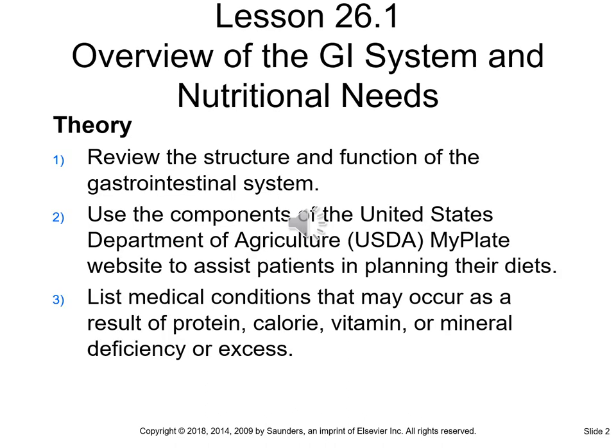These are the theory objectives for this chapter. One, review the structure and function of the gastrointestinal system. Two, use the components of the United States Department of Agricultural MyPlate website to assist patients in planning their diets. And three, list medical conditions that may occur as a result of protein, calorie, vitamin, and mineral deficiency or excess.